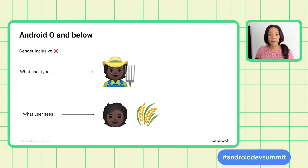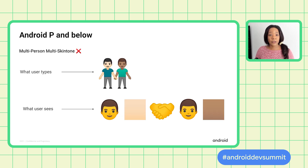Here's an example of an issue on Android O and earlier versions, where gender-inclusive emojis are not properly supported. And on Android P and below, multi-person, multi-skin tone emojis are not supported. As you can see on screen, it is not a good user experience for the recipient and hurts communication between the sender and the receiver.